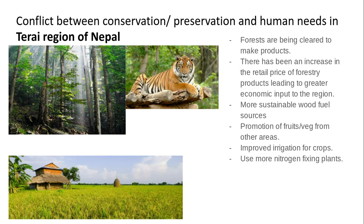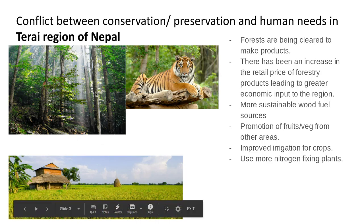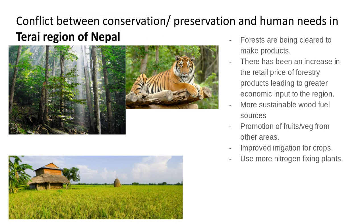The second area that we need to look at is the Tahari region of Nepal. We have beautiful forests here that support wildlife such as the Bengal tiger, but as you can see in this image at the bottom, these forests are being cleared to make products and also to create areas for farming. To help combat this, the government have managed to have an alliance with other countries to increase the retail price of forestry products, leading to greater economic input into the region so hopefully they can leave some of the forest alone.